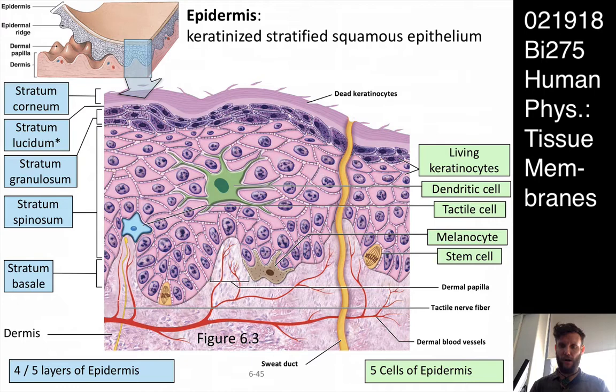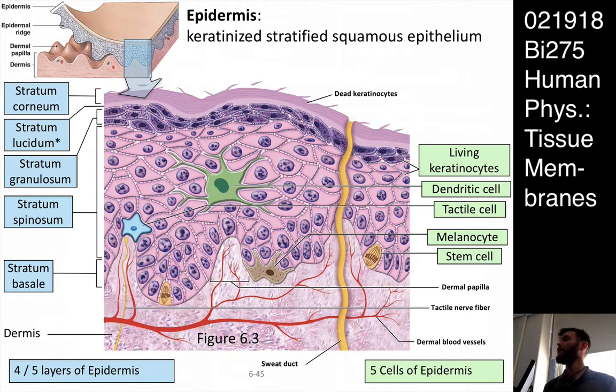The important other cells in the epidermis are the tactile cells and the melanocytes. Melanocytes are the cells that have melanin in them. They produce the pigment melanin that helps protect the more delicate underlying surfaces from the deleterious effects of UV radiation.